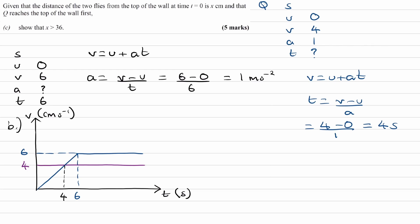Okay, for part C. Given that the distance of the two flies from the top of the wall at time t equals 0 is x centimeters, and that Q reaches the top of the wall first, show that x is greater than 36. So basically, show that the height of the wall has to be at least 36 centimeters tall. We're told that Q reaches the top of the wall first, so that means that it must have overtaken fly P.